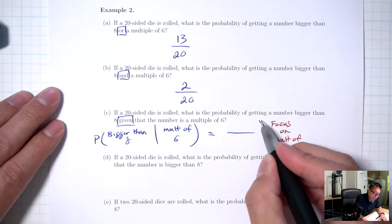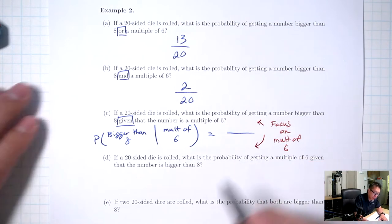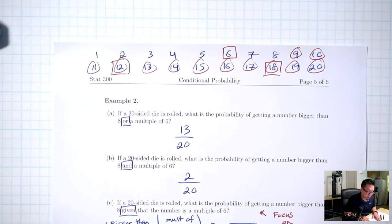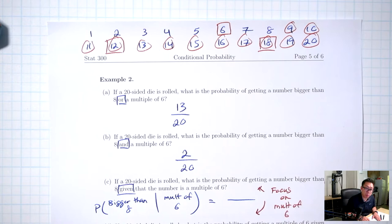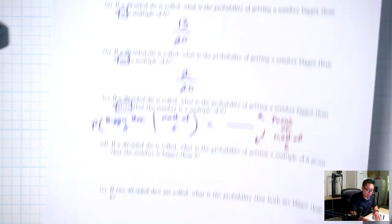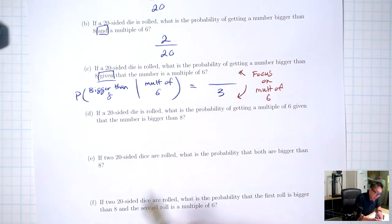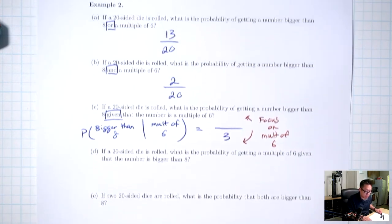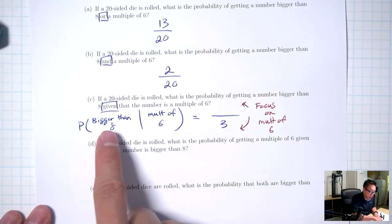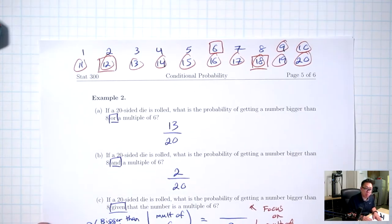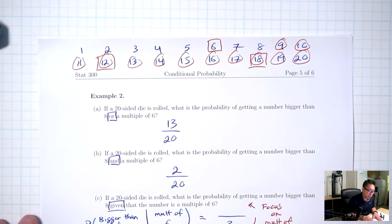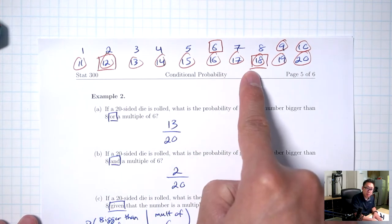Focusing on just the multiples of 6, which are the boxes, how many are there total? 3. So that's the total for the bottom. And then still just focusing on multiples of 6 — the boxes — how many are bigger than 8? Those two: 12 and 18. So the answer is 2/3.